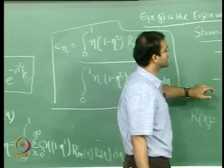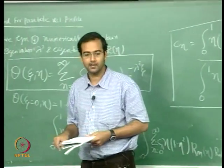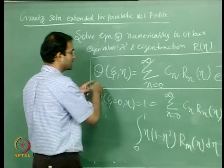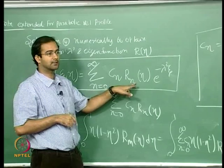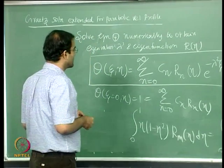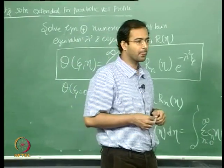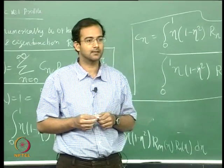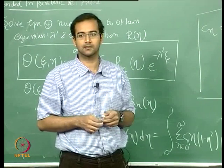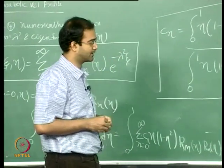I will give the expressions for evaluating these two integrals in the next class. Sellers et al. used approximate methods to evaluate the eigenvalues and corresponding constants, and I will provide those tables as well. From there it is substitution. Once you have the constants C_n, the solution for θ is fully known. Asymptotically for large x, this recovers the Nusselt number of 3.66 for constant wall temperature with a parabolic profile.